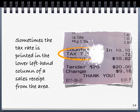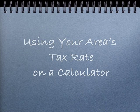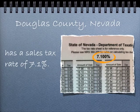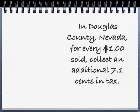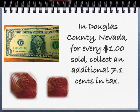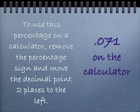Sometimes the tax rate is printed in the lower left-hand column of a sales receipt from the area. Using that area's tax rate on a calculator requires translating the sales area's tax rate into a decimal multiplier that you can use on the calculator. For example, Douglas County, Nevada has a sales tax rate of 7.1%. That means for every dollar you sell, you need to collect an additional 7.1 cents in tax. To use this percentage on a calculator, remove the percentage sign and move the decimal point two places to the left, giving you .071 as a multiplier.